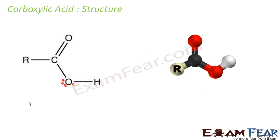Let's understand the structure of carboxylic acid. If you see the angle between carbon and oxygen here, this angle is 120 degrees. This is my carbon, this is my oxygen, oxygen and hydrogen.